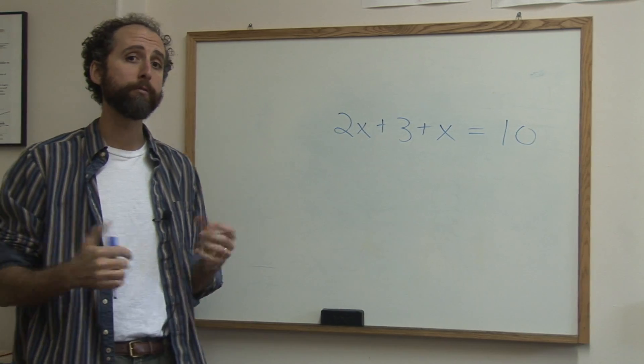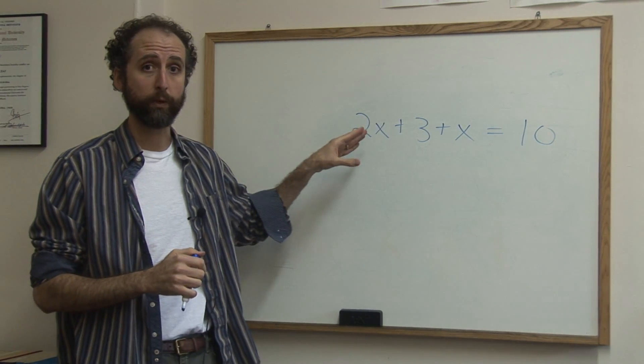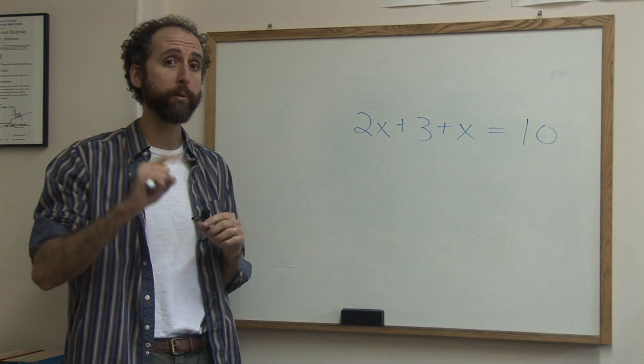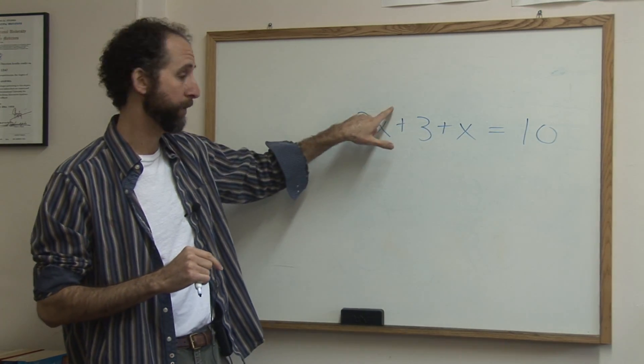Now first of all when you solve, what we're really saying is what does x equal? What's the value of x? And there's only going to be one number that makes this true because x is to the first.